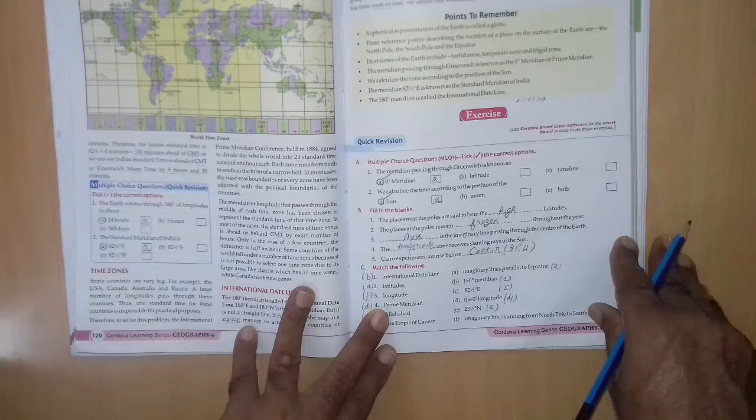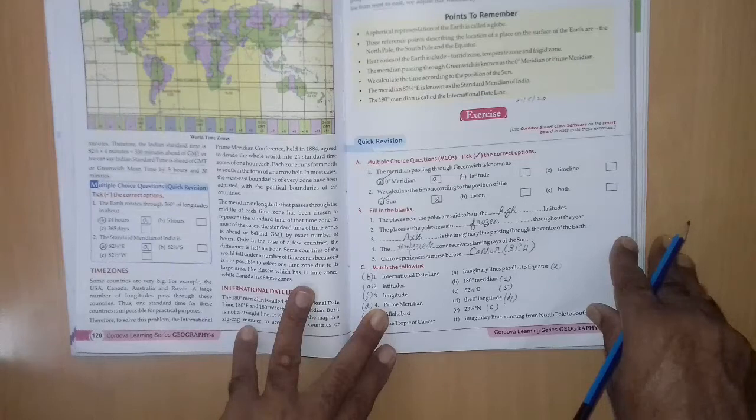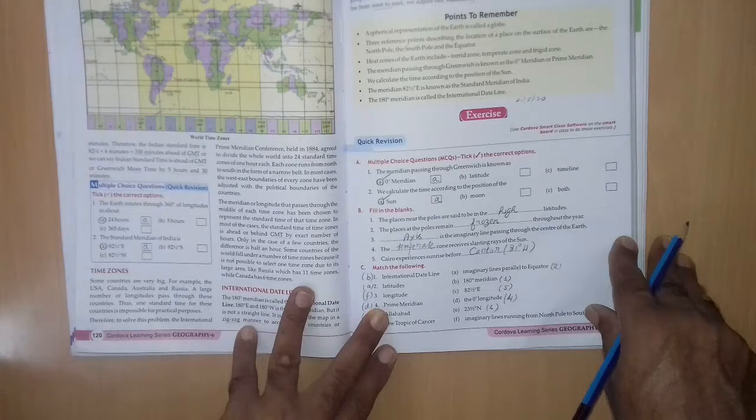2nd question, we calculate the time according to the position of the A sun, B moon, C both. Right answer is A sun.